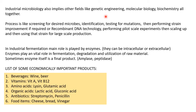If strain improvement is needed to get higher yields, genetic engineering approaches are used. The process involves screening for desired microbes, identification, testing for mutation, performing strain improvement if required, or using recombinant DNA technology, then pilot-scale experiments, scaling up, and using that strain for large-scale production. After large-scale production, downstream steps recover, purify, check quality, and package the product before it goes to market.